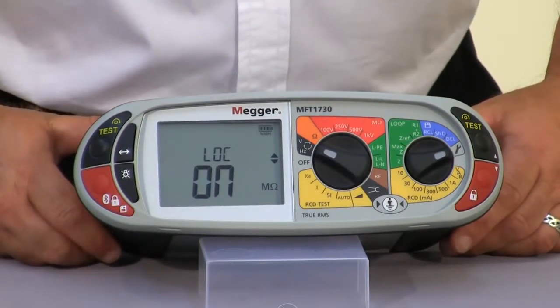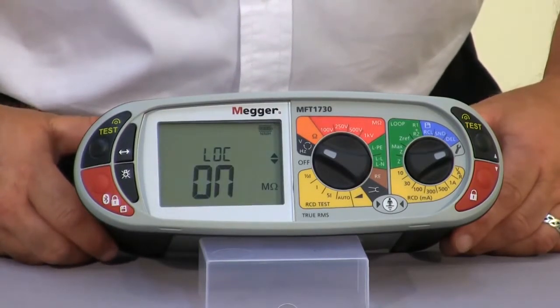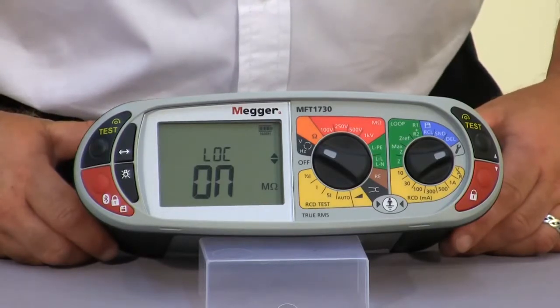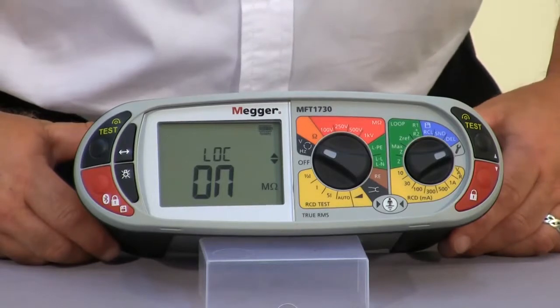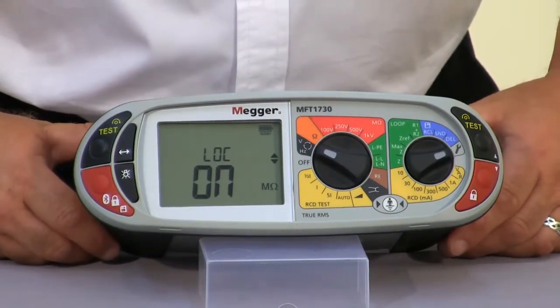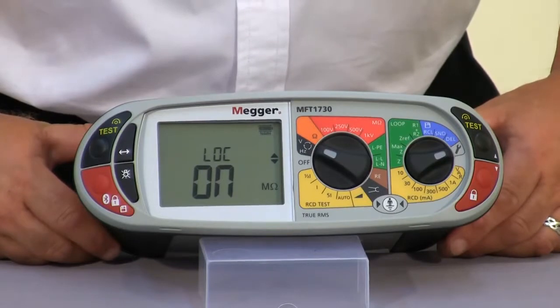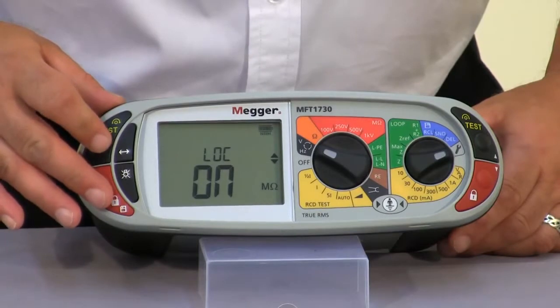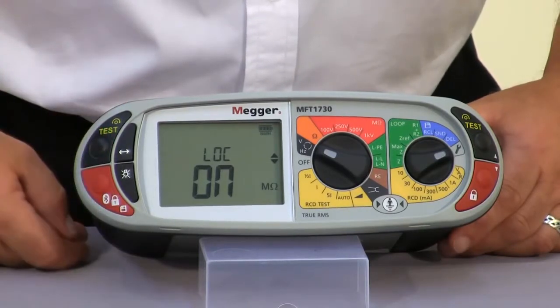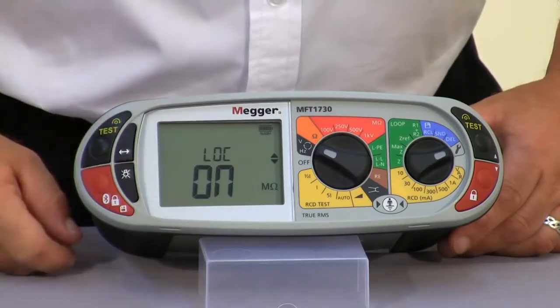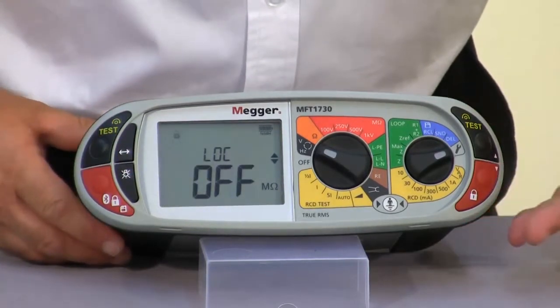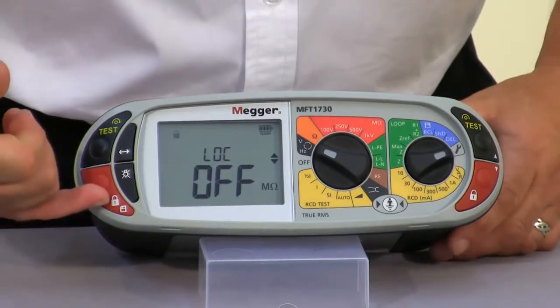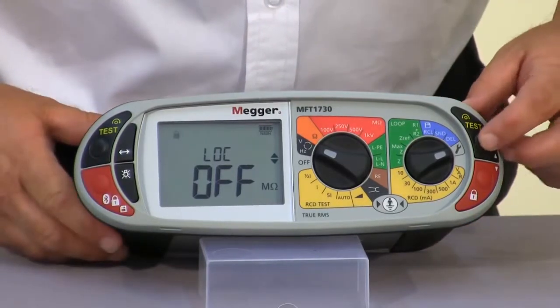The LOC is the insulation test lock. Now this is defaulted to on. The 1720 and the 1730 units come with a test probe which allows us to maintain two-handed operation. However, some people like to press the test button and lock the test on, so you have the applied voltage on the probes all the time. At the moment it's defaulted to on, but to select off, just use the up and down, and then we would select save. I'm going to leave it in the on position.